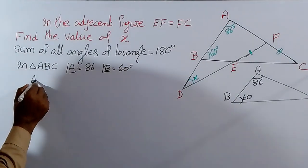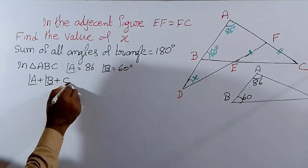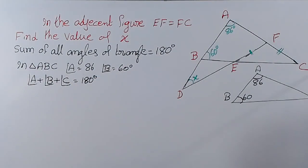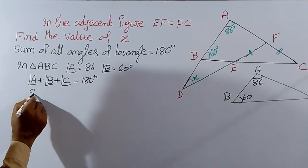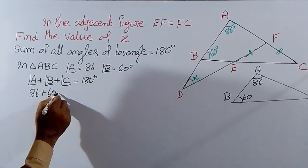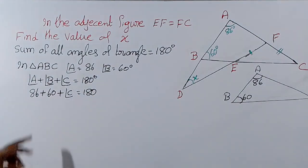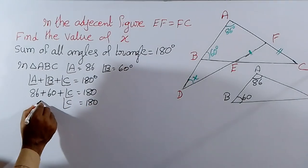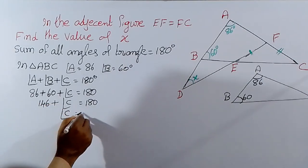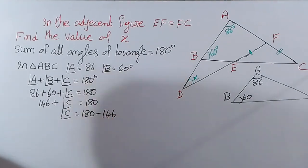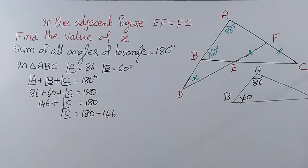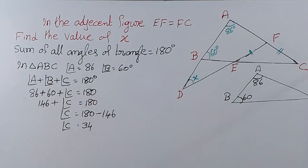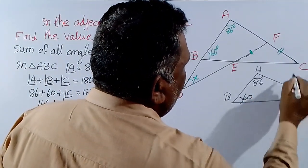Angle A plus angle B plus angle C equal to 180 degrees. Angle A is 86 plus angle B is 60 plus angle C equal to 180. What is 86 plus 60? That is 146. So angle C equal to 180 minus 146, which equals 34 degrees.